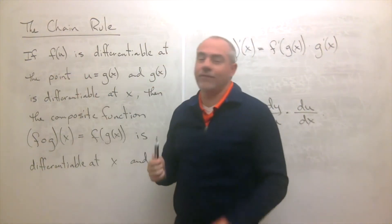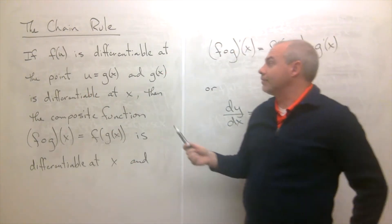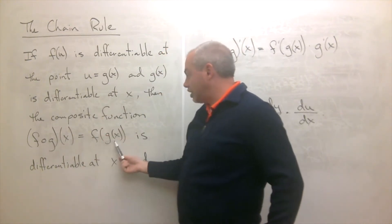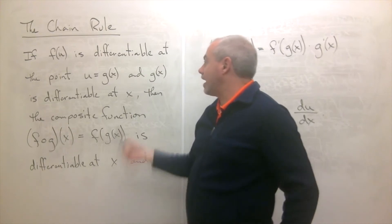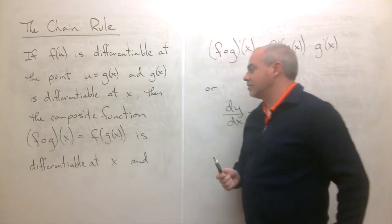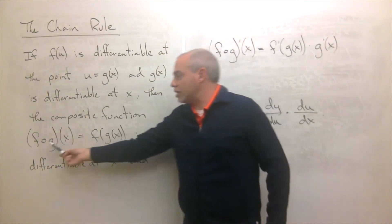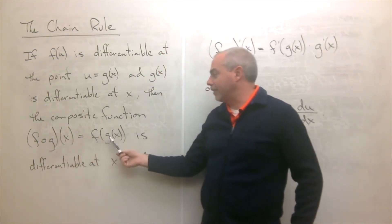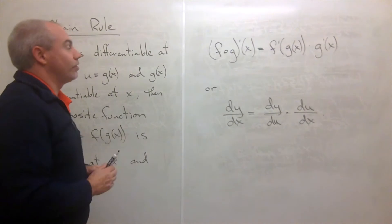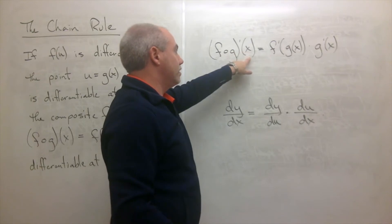The chain rule says that if you have a function f of u, where u itself is a function of x — so u equals g of x — then we've got f of g of x as our function. If g of x is differentiable at x, then the composite function f composed with g of x is differentiable at x, and this is how we take the derivative.